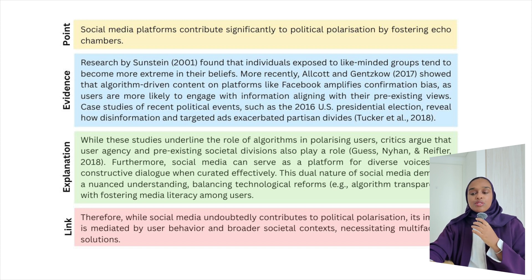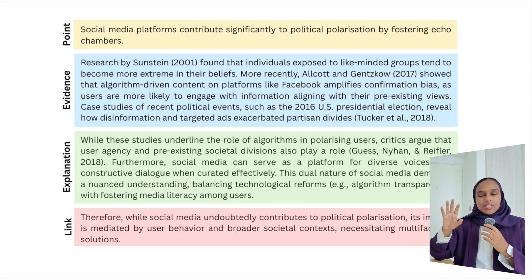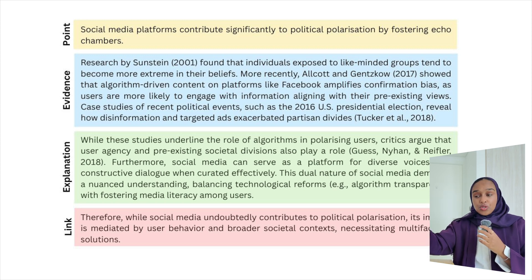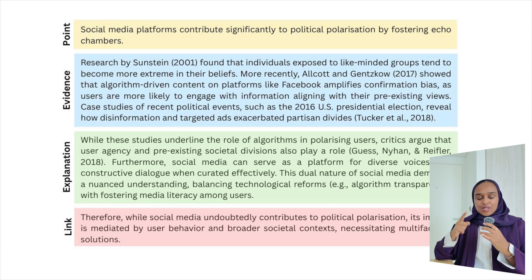And here's the link: therefore we need to look at different solutions for how to moderate behavior online. This is a really good example because there's no simple yes or no to this research question. Using this structure, you can see I've got a really clear point, I've given evidence, I've given a case study of the US presidential elections, I've explained it, and I'm linking it to the next point — which might be multifaceted solutions. You cannot go wrong with this structure because you've included a point, given evidence, included critique, and linked it forward. It's a perfect structure.